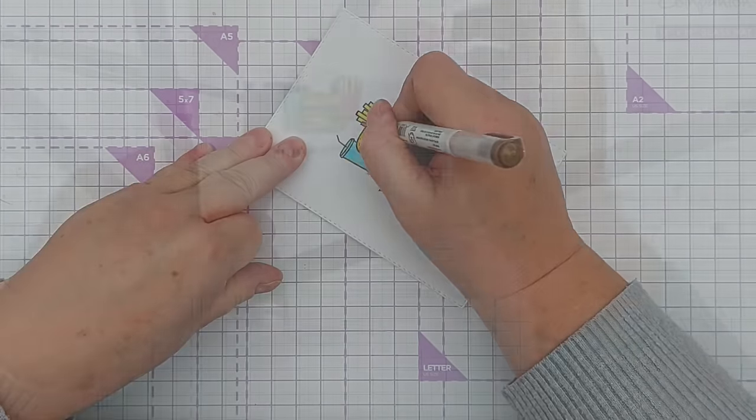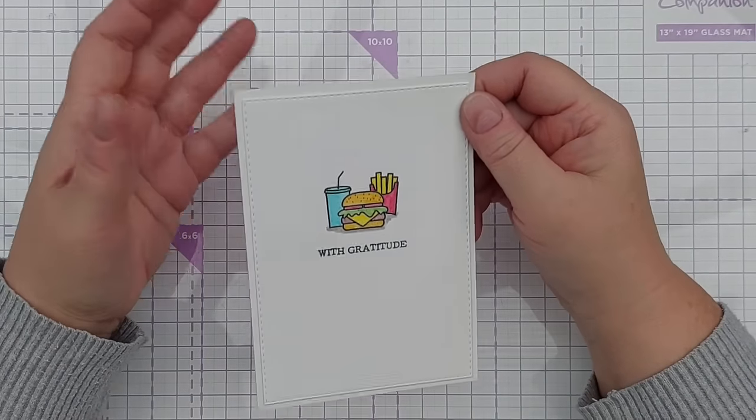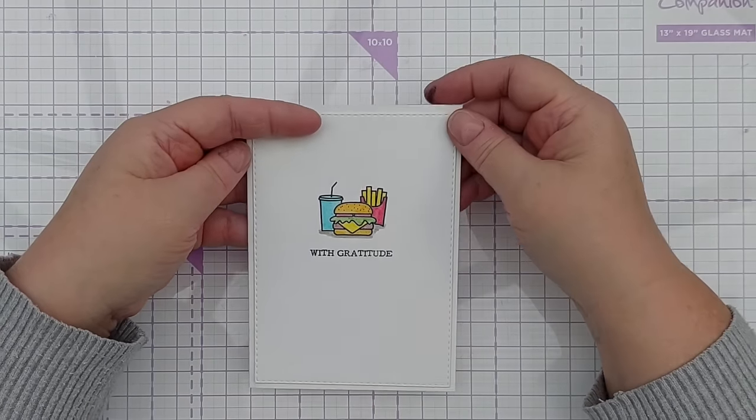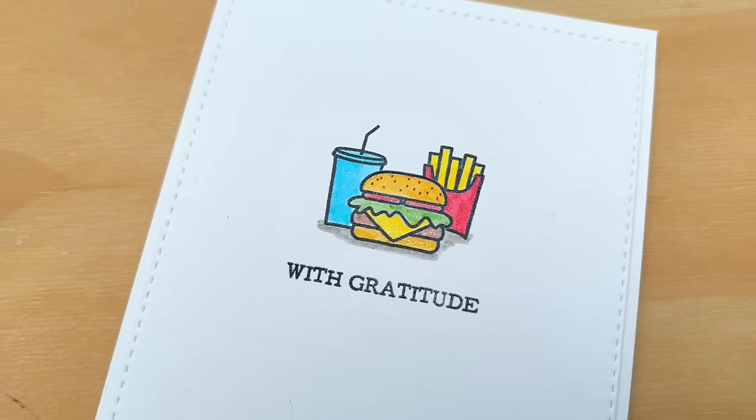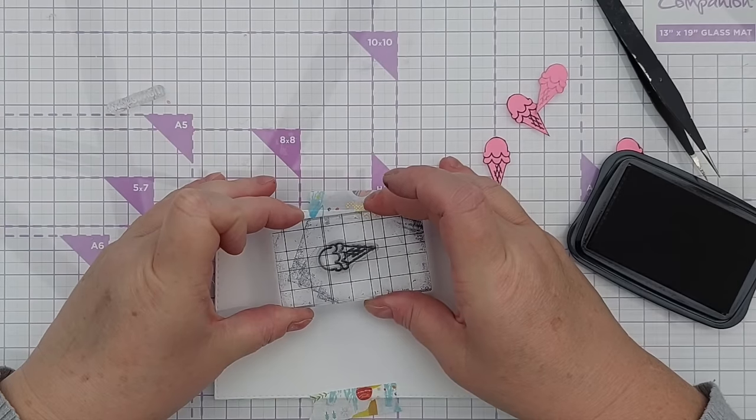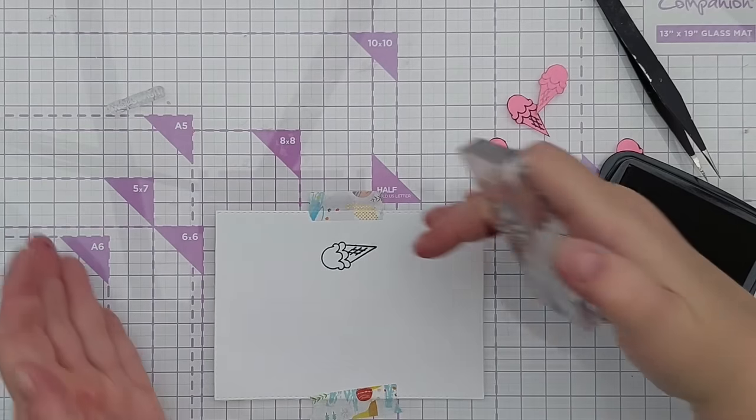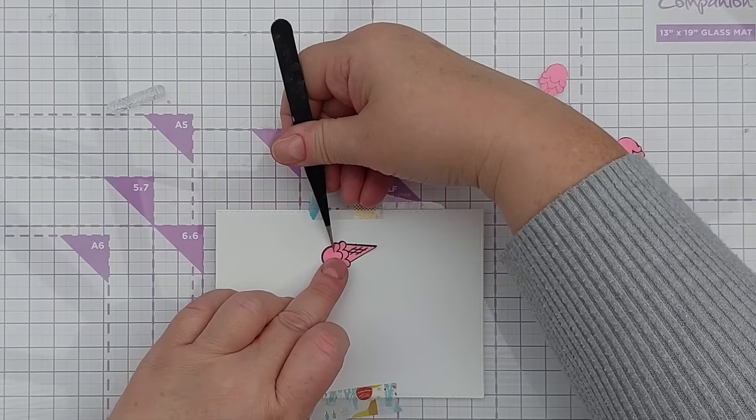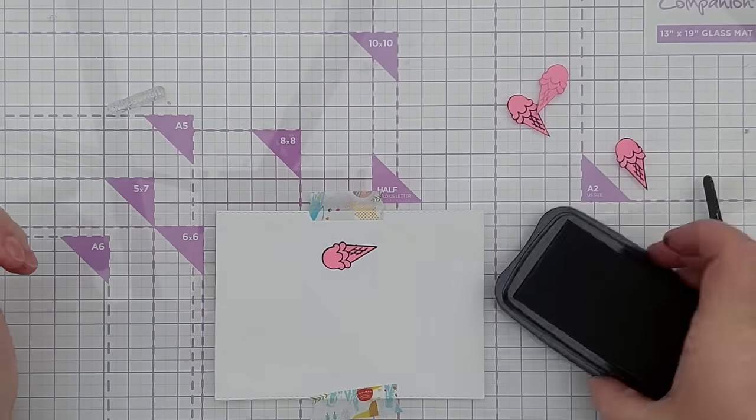When you're trying to build a scene using stamps and masking, think about the object that is going to be closest to you in that scene and stamp that first. Then mask it off and then stamp the background things and they will appear behind the masked off image. I want a little cascade of ice creams going down the right hand side. I want the ice cream in the middle here to be the one in the front. So I've stamped that first.